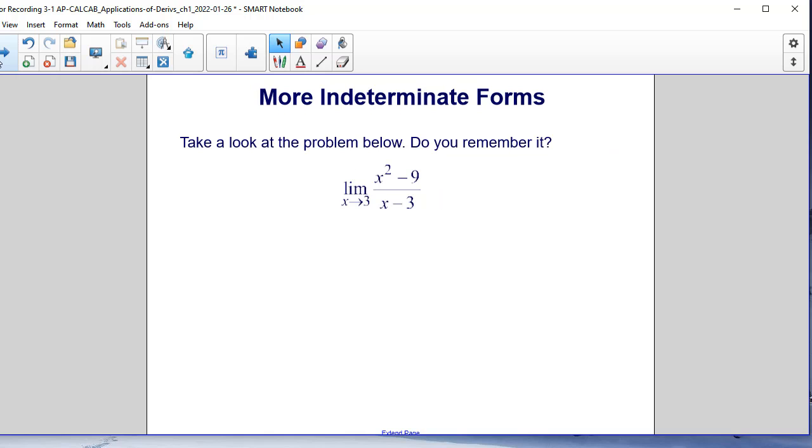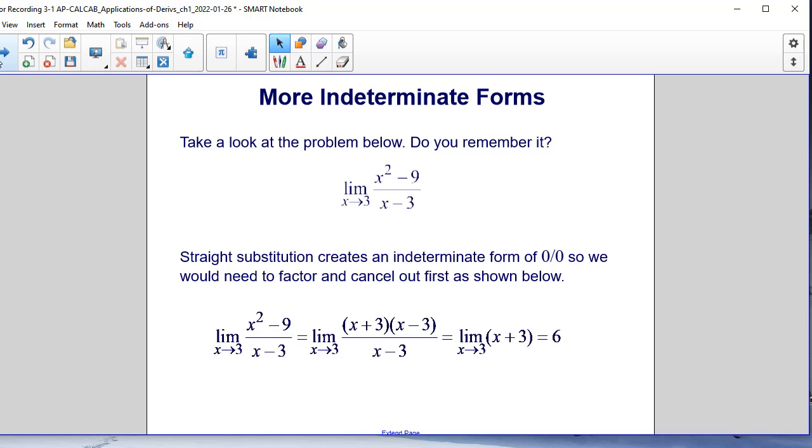So in our limit unit, we had a problem that looks something like this: the limit as x approaches 3 of x squared minus 9 divided by x minus 3. Now with straightforward substitution, it's easy to see that we are going to have a 0 over 0.